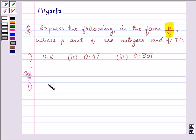The first part which is given to us is 0.6 bar. Now in these type of questions let us take x as 0.6 bar. Now on multiplying both the sides by 10 we have 10x is equal to 6.666 which goes on.